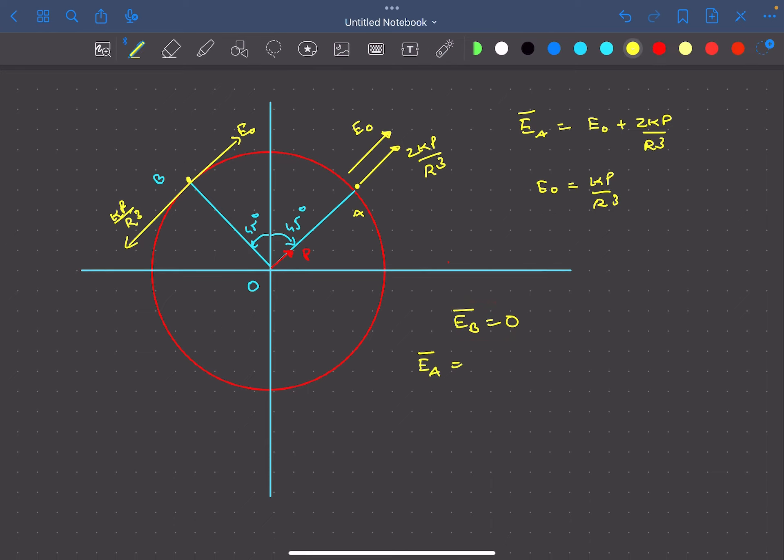The net electric field at point A is going to be 3E₀, since 2kp/R³ equals 2E₀. So the net electric field at point A is 3E₀ in the direction (î + ĵ)/√2.